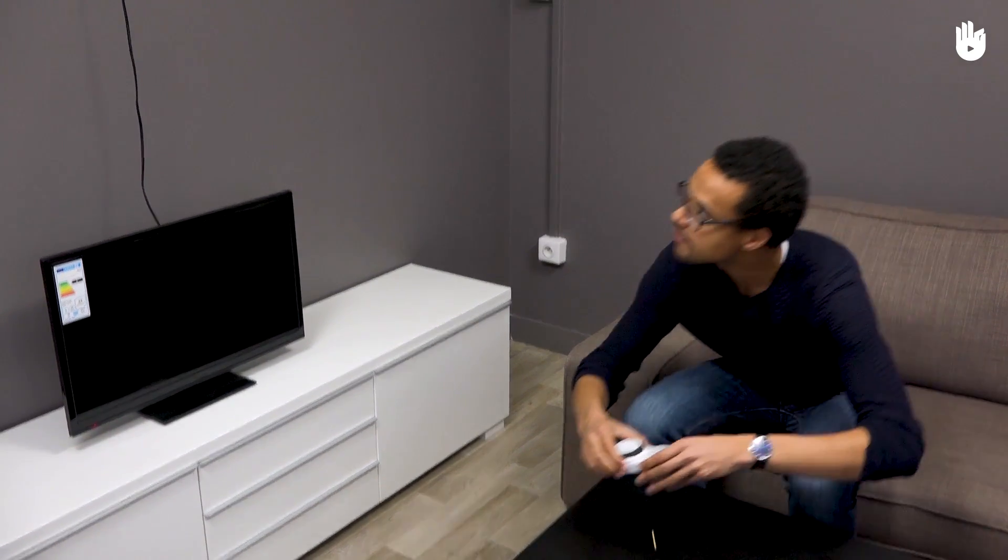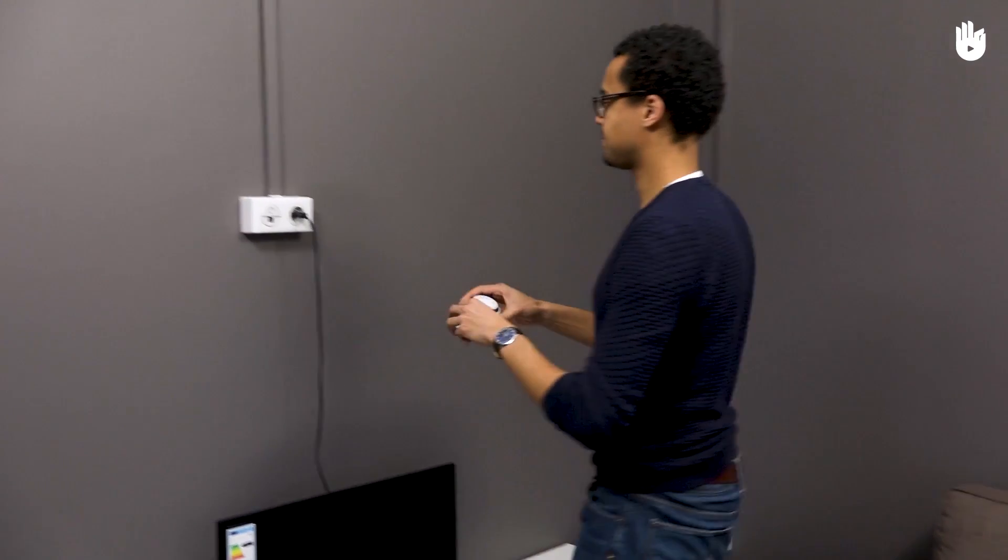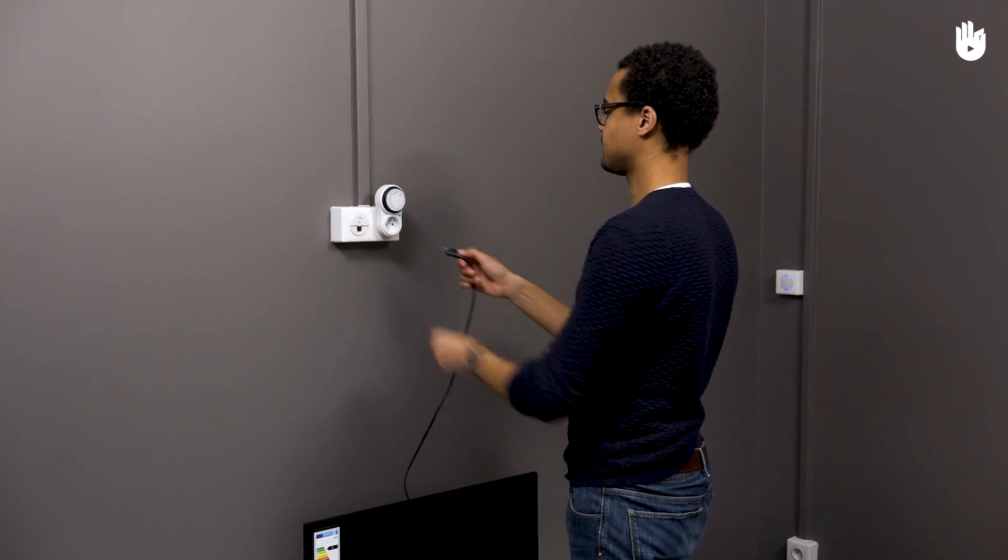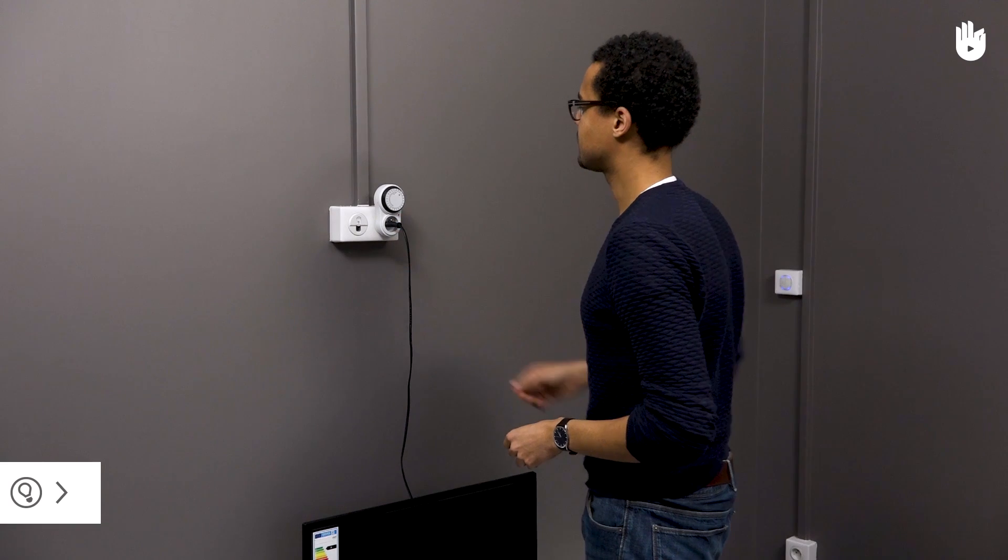Once you've set the time and timer, plug the timer in at the mains and then plug in your electrical device. The schedule you've set will continue until you change it.